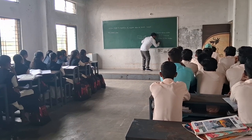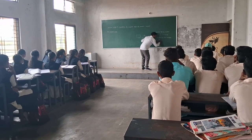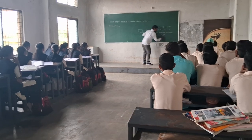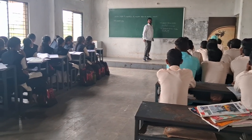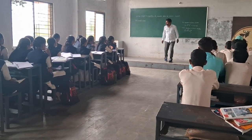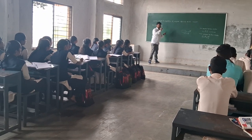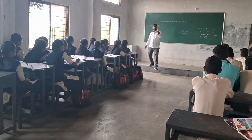Tau is equal to vector F cross vector r. What is the vector r here? It is the perpendicular distance. Which distance? The perpendicular distance. For that, I will just give the example.